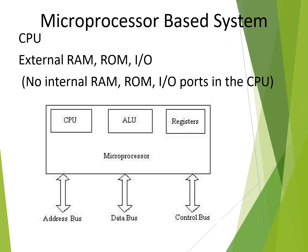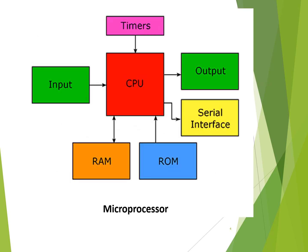Before going into microcontroller, let us see what a microprocessor is. A microprocessor is a single chip which consists of a central processing unit, arithmetic and logic unit, and registers. All these three components put into a single chip — we call it a microprocessor. They don't have any internal RAM, ROM, or IO ports, but they can be connected externally.